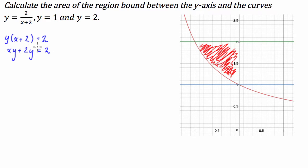I'm going to move the 2y over the other side, xy equals 2 minus 2y, and finally I'm going to divide each side by y, so x equals 2 minus 2y over y.